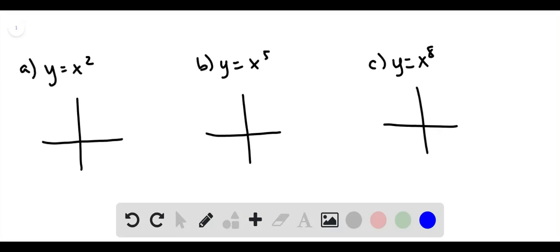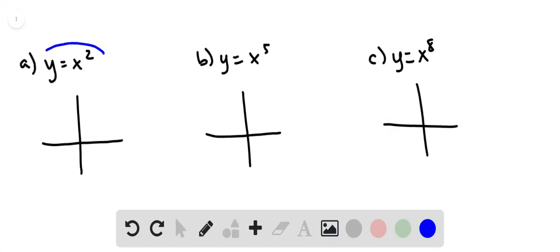In this problem, we want to match the equations with the graphs. Hopefully we're familiar enough with y equals x squared - we've had lots of practice with those. That should look like a parabola with its vertex at 0, 0, and that graph matches with h.